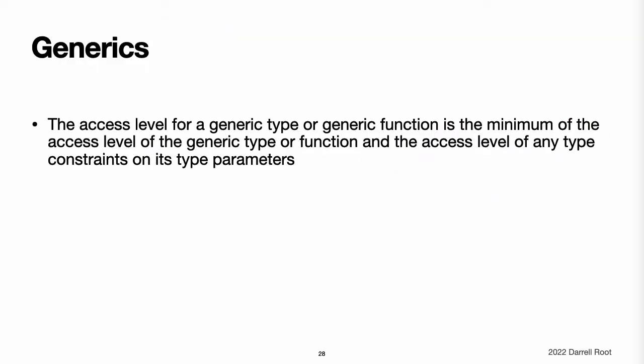Generics. The access level for a generic type or generic function is the minimum of the access level of the generic type or function itself and the access level of any type constraints on its type parameters.